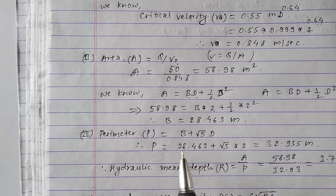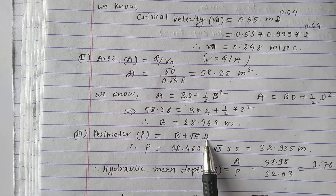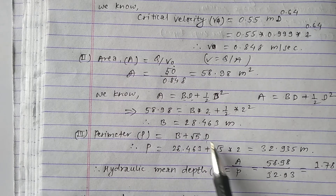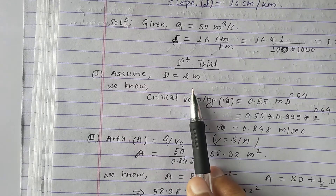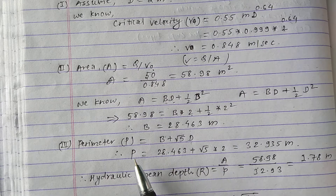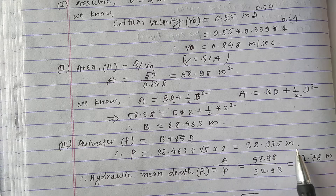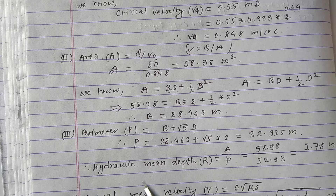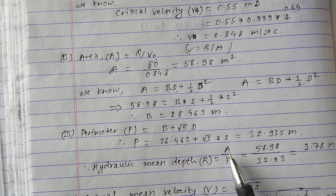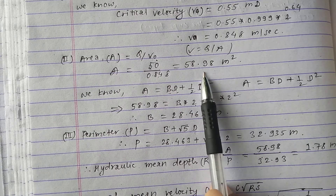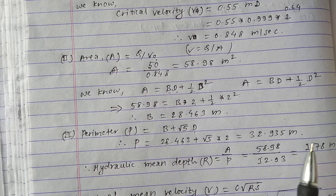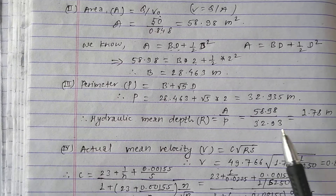In the third step, we calculate the perimeter. The perimeter formula is P = b + √5 × d. Substituting b = 28.46 m and d = 2 m, we get P = 32.935 m. Then the hydraulic radius R = A / P = 58.98 / 32.93 = 1.78 m.